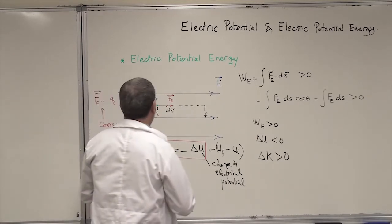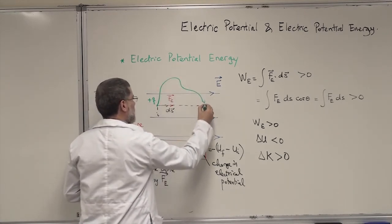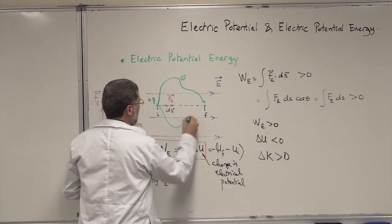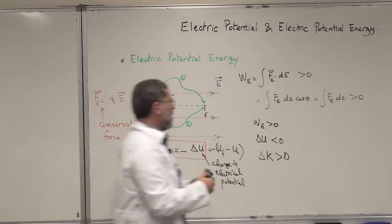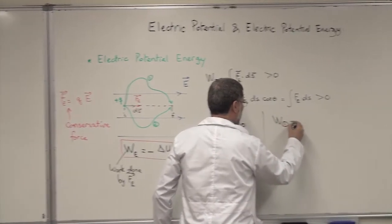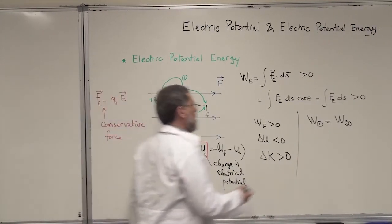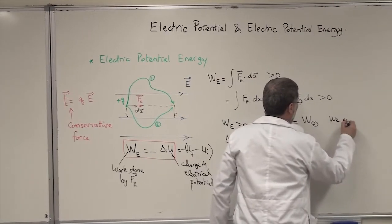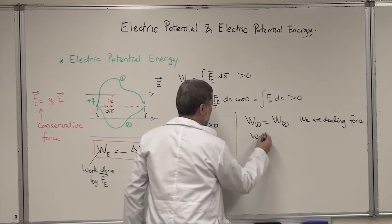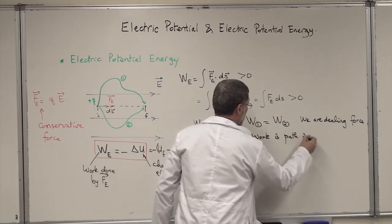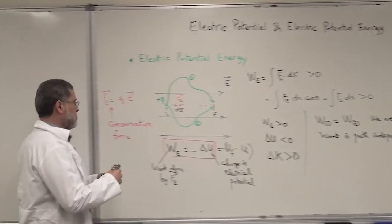This particle can move along different paths — for example, path number one or path number two. For a conservative force, the work is path independent. So W along path one equals W along path two, and equals W along any other path. The work is the same regardless of which path you take because we are dealing with a conservative force.